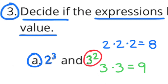Part a: 2 to the third power and 3 to the second power. 2 to the third power is 2 times 2 times 2, which is 8. And 3 to the second power is 3 times 3, which is 9. So 3 to the second power is greater than 2 to the third power.